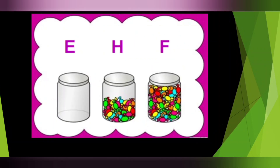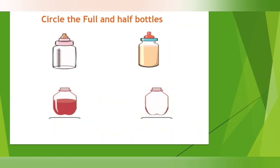Now, if you represent E for empty, H for half, and F for full — if you observe these jars: in the first jar there are no chocolates, that means the jar is empty. In the second one, half chocolates are there. And in the third one, full.